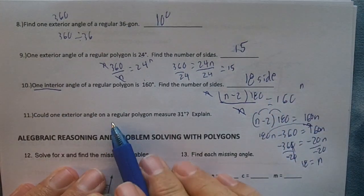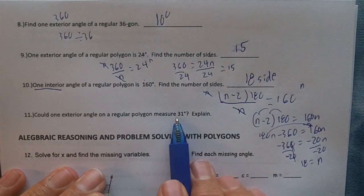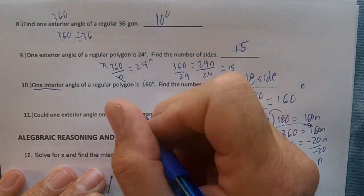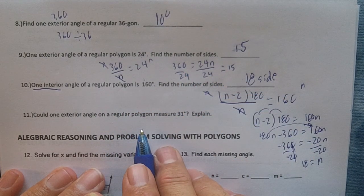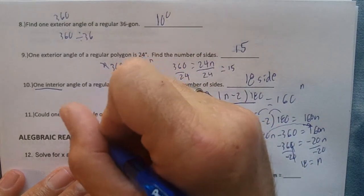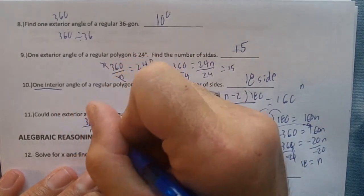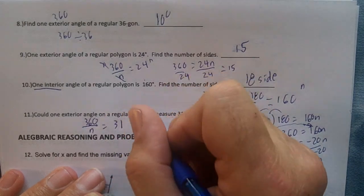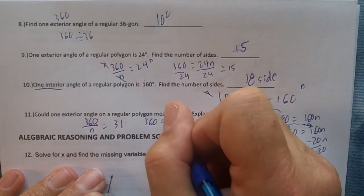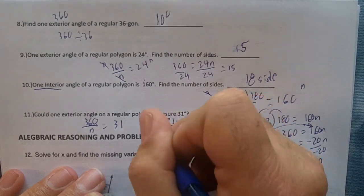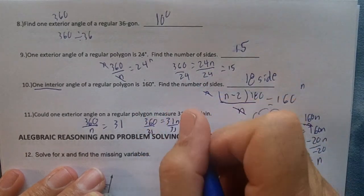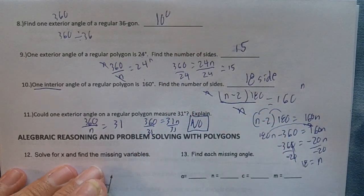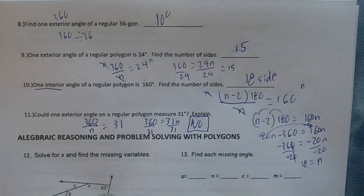Could one exterior angle on a regular polygon measure 31 degrees? 360 divided by n has to be 31 for a regular polygon to work. So you would have 360 equals 31n. Will 360 divide by 31? No, it won't. So no, because 360 is not divisible by 31.